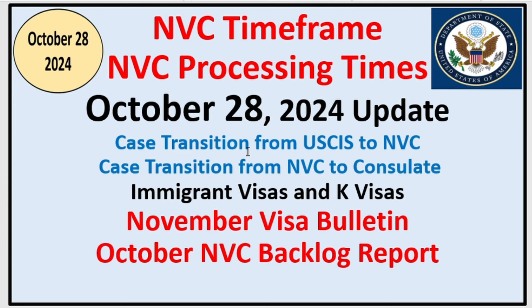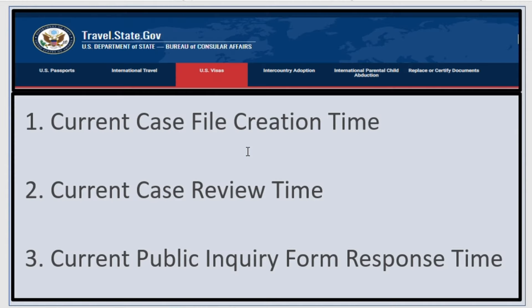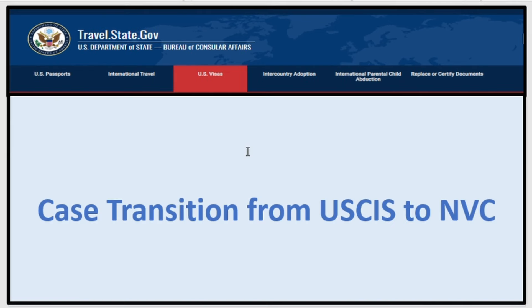So if you're ready, let's go. There are three NVC time frames: the first is the current case file creation time, the second is the current case review time, and the third is the current public inquiry form response time. The top two are crucial to your case and you must understand them. We are going to define them and then give the processing times.